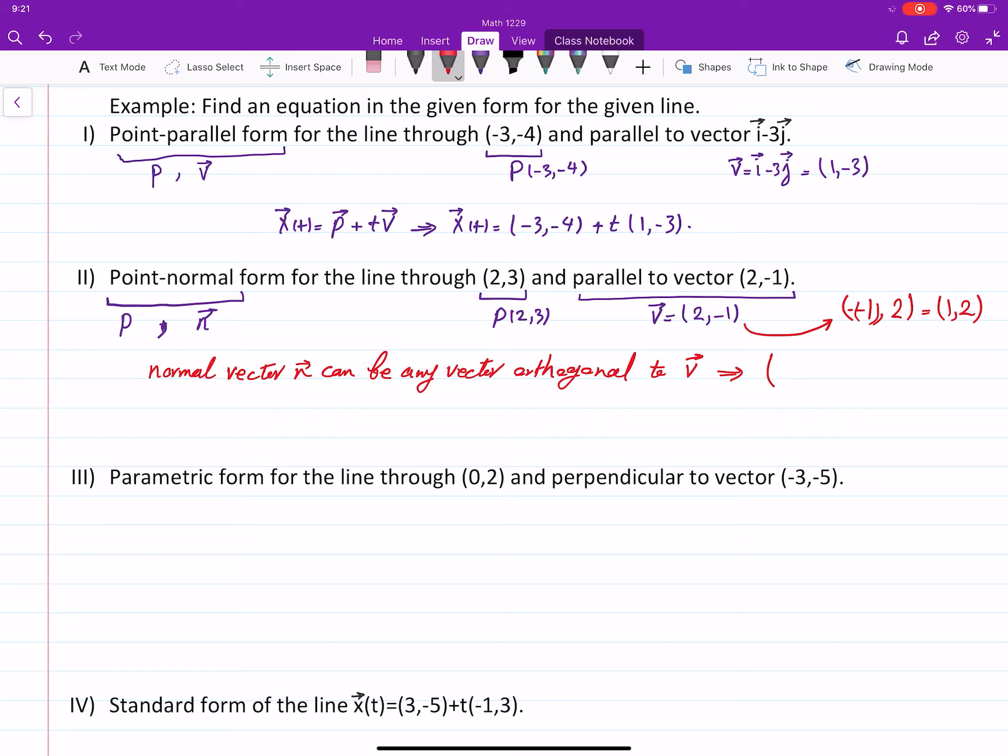So here, then 1, 2 is a vector which is perpendicular to, orthogonal to the vector 2, 1. And we can take it as our normal vector. Again, by switching the coordinates and multiplying one of the coordinates components by negative 1, we get a vector in R2. We get a vector which is orthogonal to the original vector.